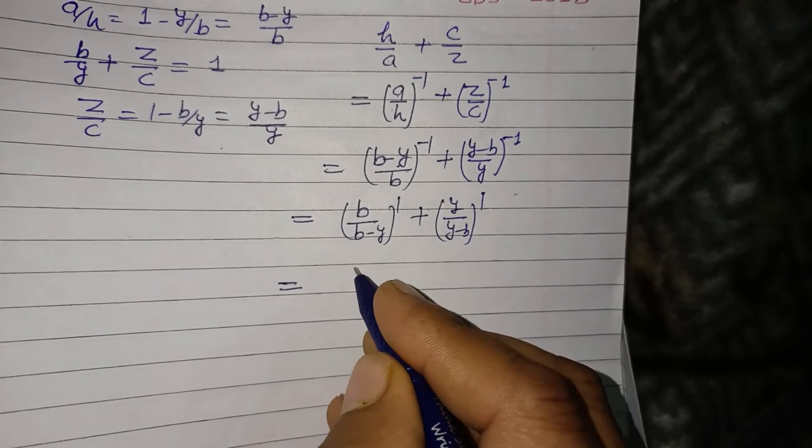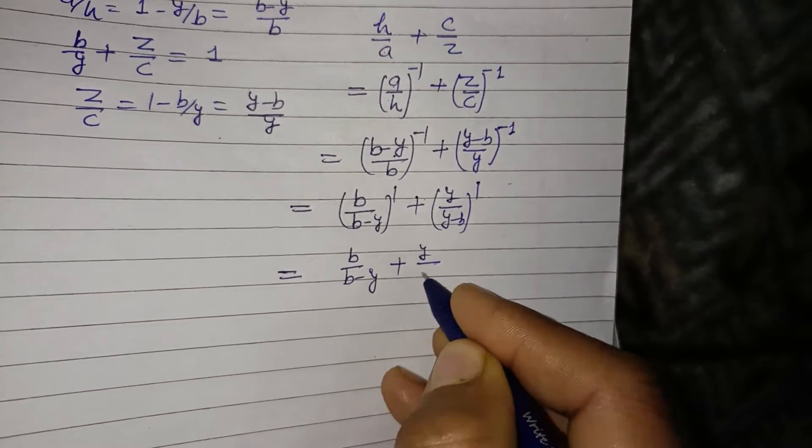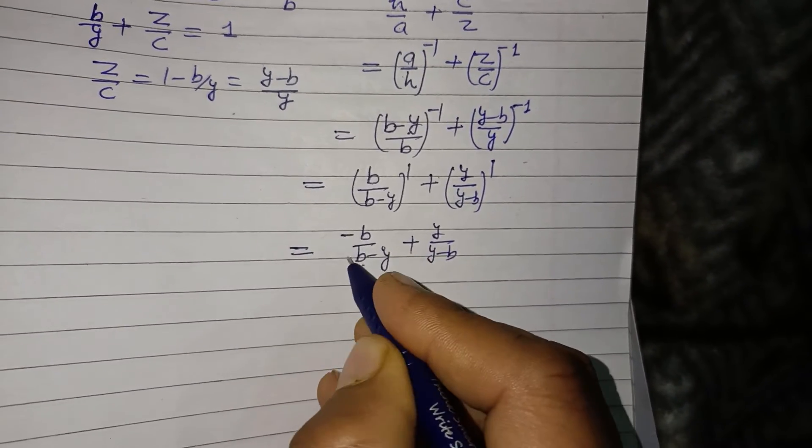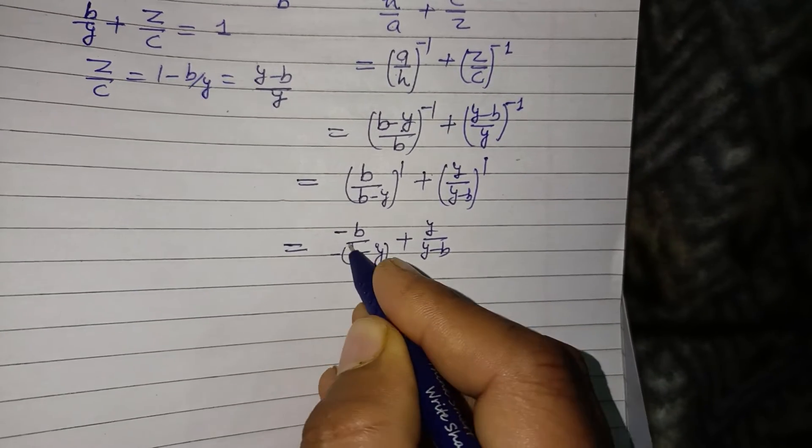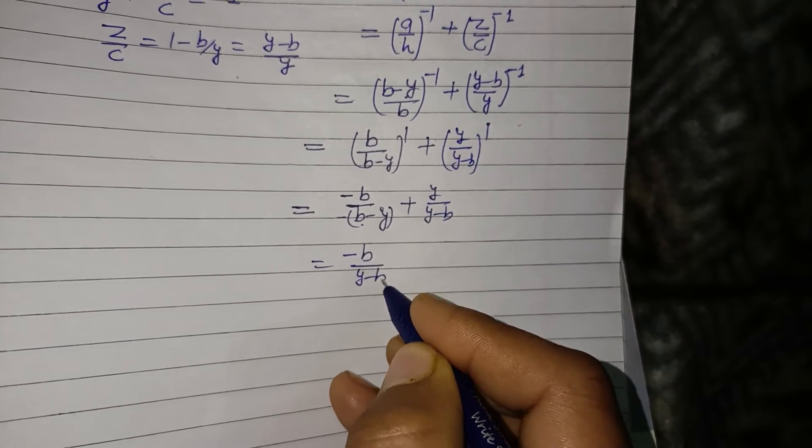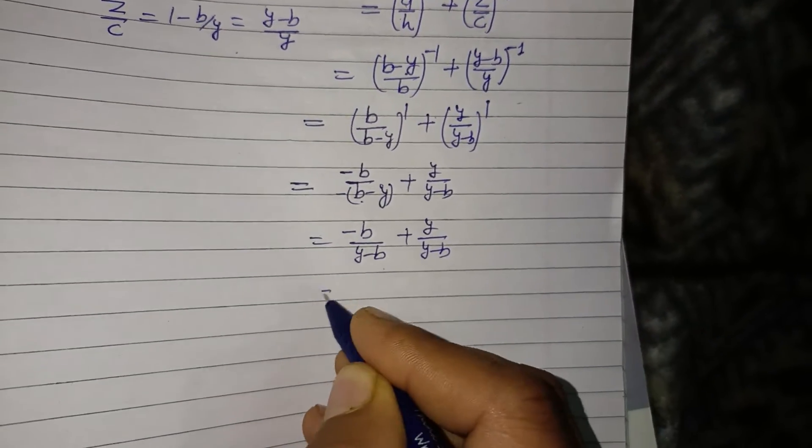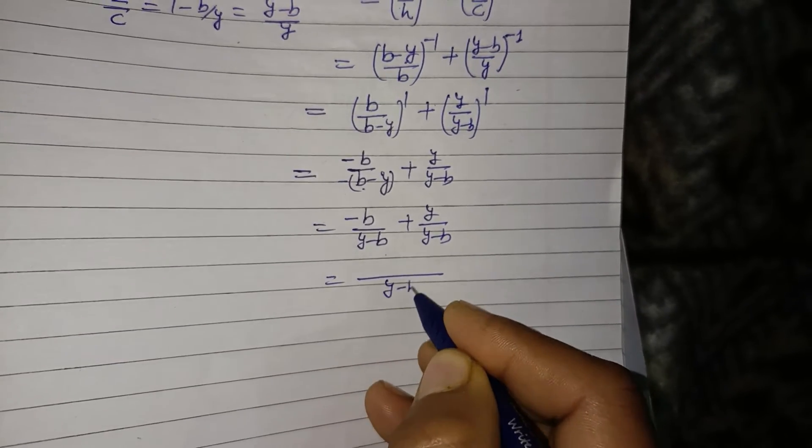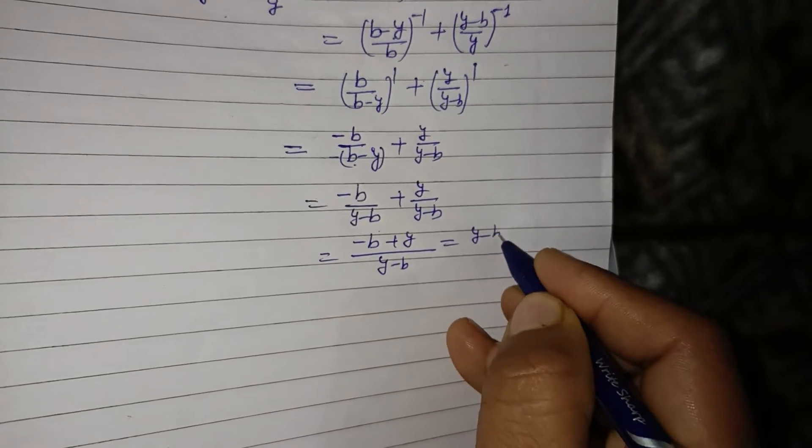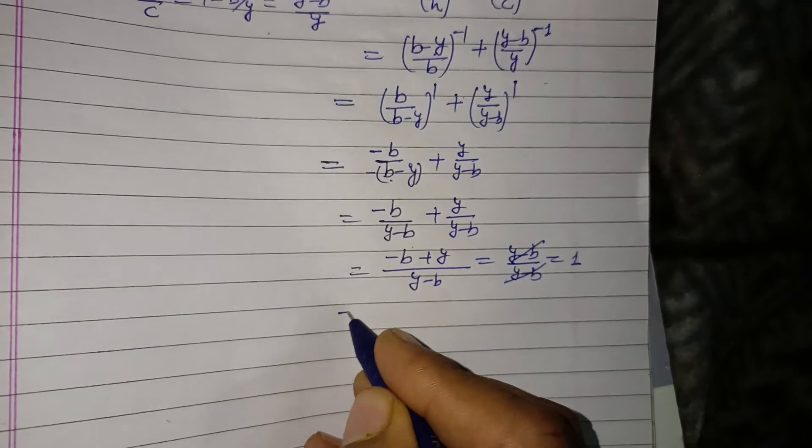Power of 1 can be removed easily, so b/(b - y) + y/(y - b). We multiply the numerator and denominator by -1, so this becomes -b/(y - b) and y/(y - b). Since y - b is the same in the denominator, this is (-b + y)/(y - b) or (y - b)/(y - b), which equals 1.